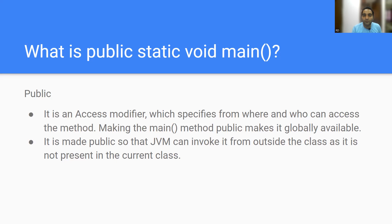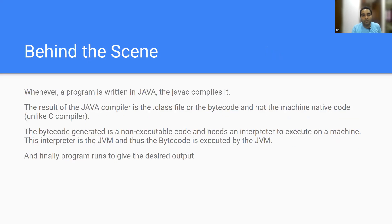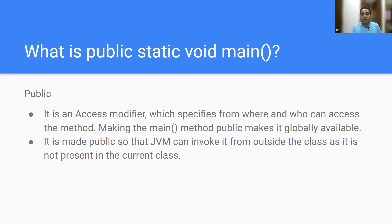If you haven't watched our previous video on what JVM, JDK, and JRE are, you can go through that first. In an interview, they might ask: why do we always write public static void main? Can we write private static void main? The answer is: main is made public so that JVM can invoke it from outside the class.